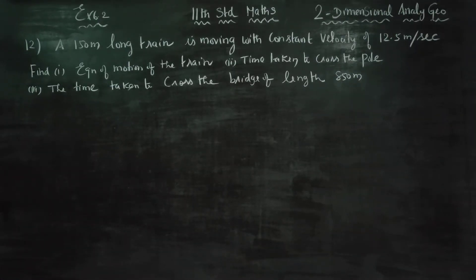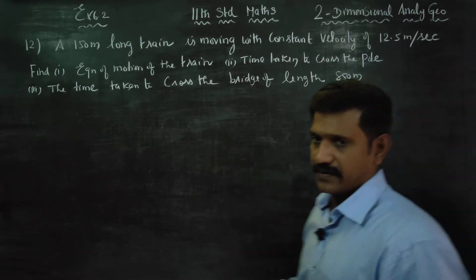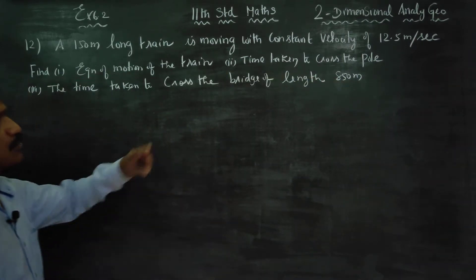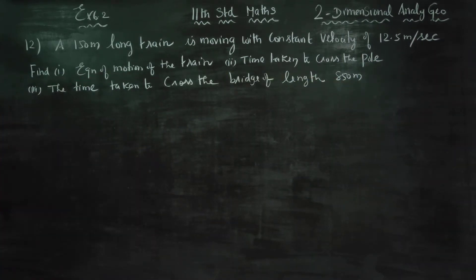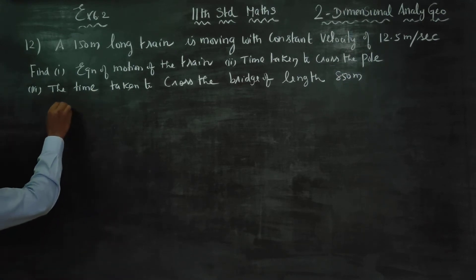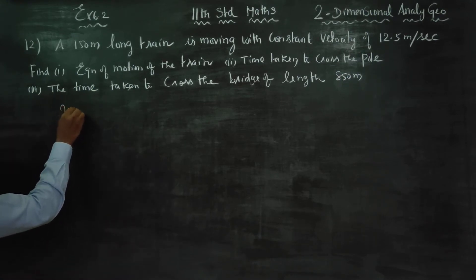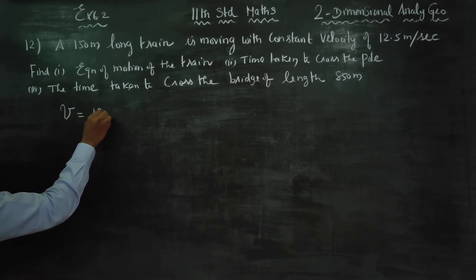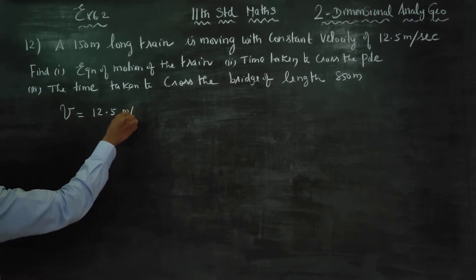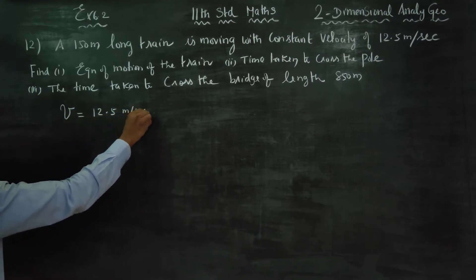Dear 11th standard students, I am Etru Karanagaran. In exercise number 6.2, a 150 meters long train is moving with a constant velocity of 12.5 meters per second. Velocity is given as 12.5 meters per second.